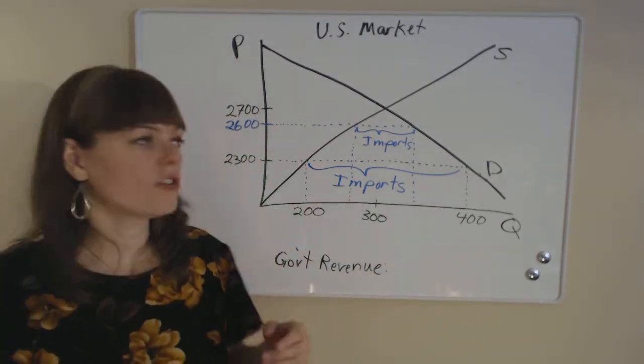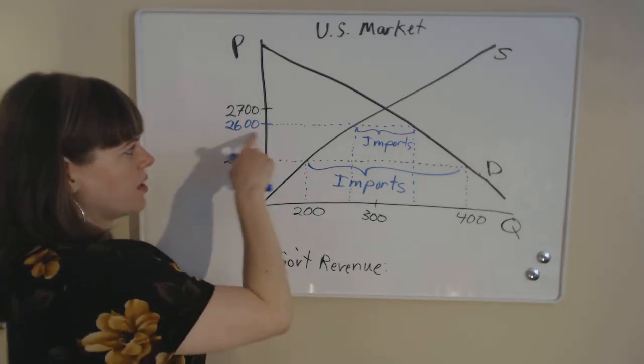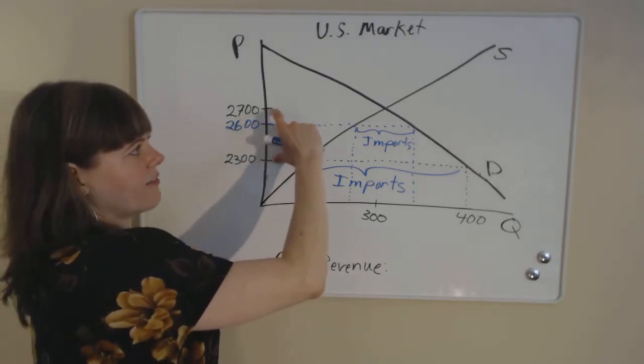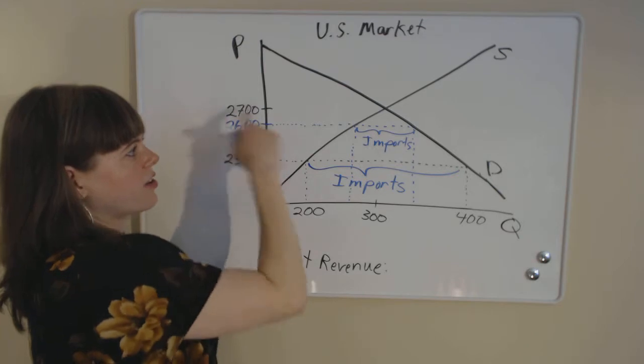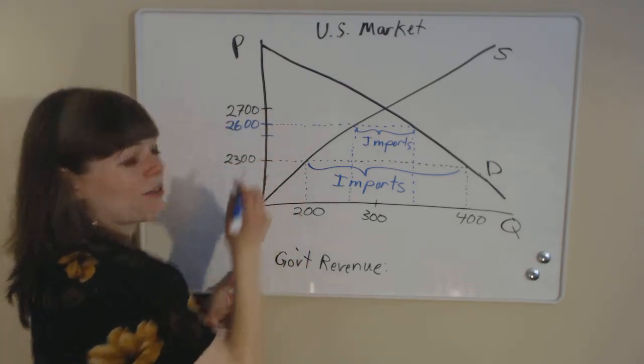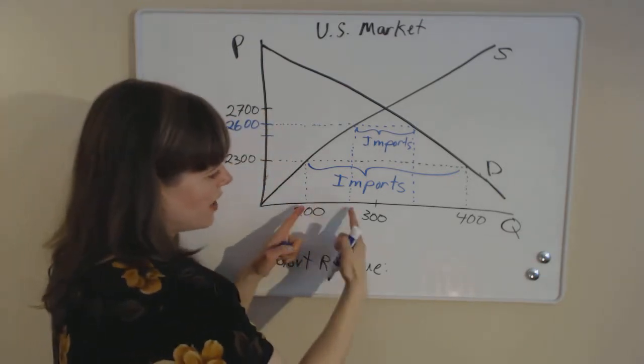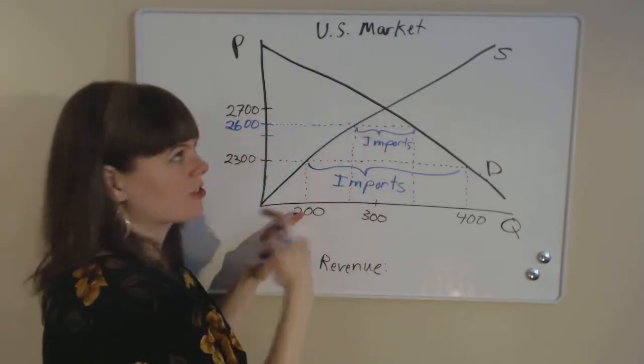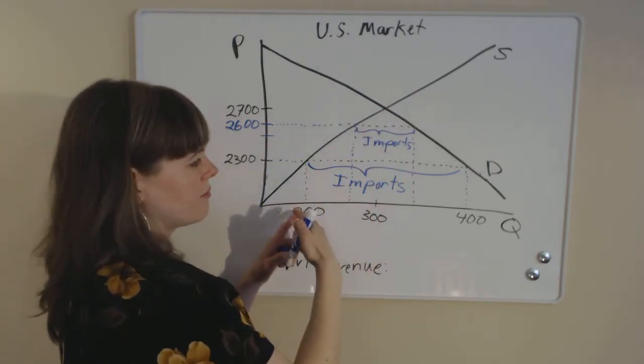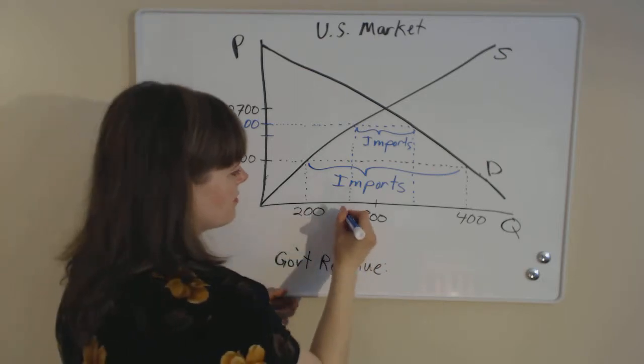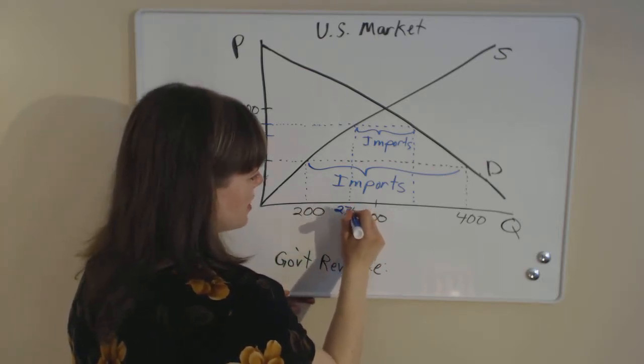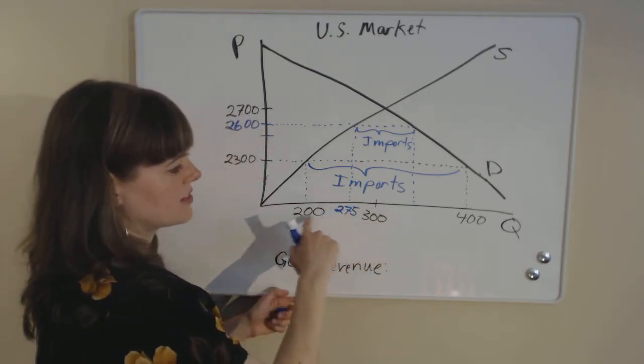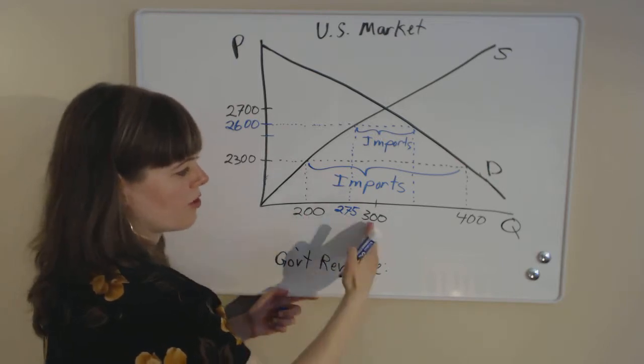One method that you could try is you could notice that $2,600 is sort of 75% of the way between $2,300 and $2,700. We know that halfway would have been $2,500. So the quantity increase, if our supply and demand curves are linear, we're going to use linear algebra to approach this, is going to be 275. That's 75% of the way between 200 and 300.